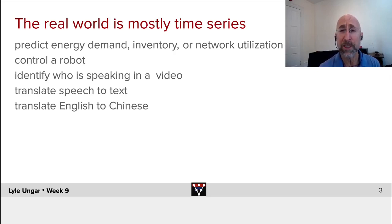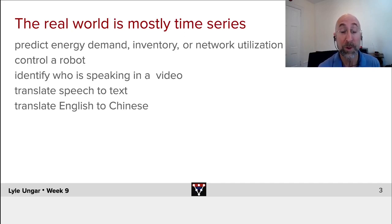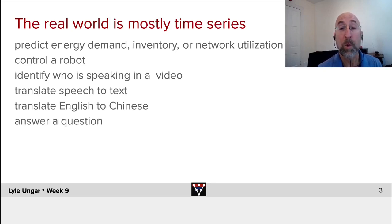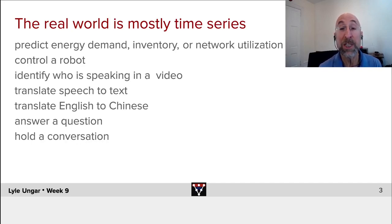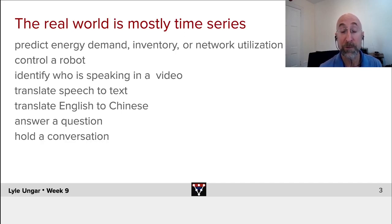Translation — Google Translate or your favorite translation system takes in a sequence of, for example, English characters and produces a sequence of Chinese characters, or vice versa. All of these also use deep learning in methods we'll cover this week and next week. Question answering or holding a conversation: I type a question to the computer, it types an answer back — maybe a sequence of question, answer, question, answer. These are methods we'll cover next week. Again, sequences of characters or words in, sequences of characters or words out — all of these are dealing with time series.